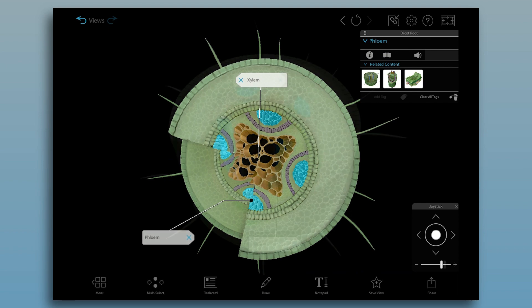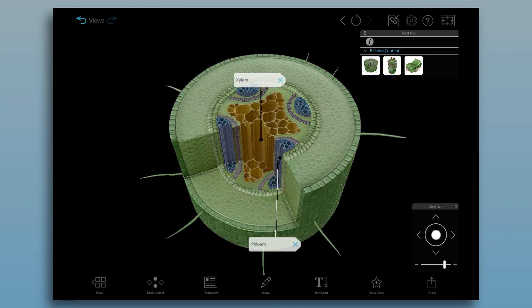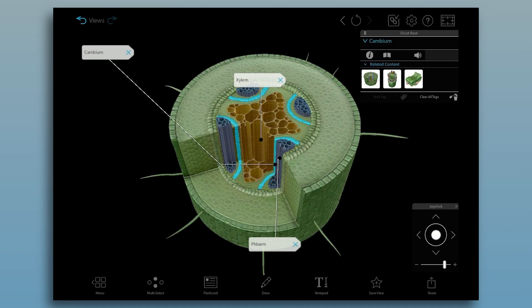There's also a layer of cells called a cambium between the phloem and xylem that creates new phloem and xylem cells and widens the girth of the root.